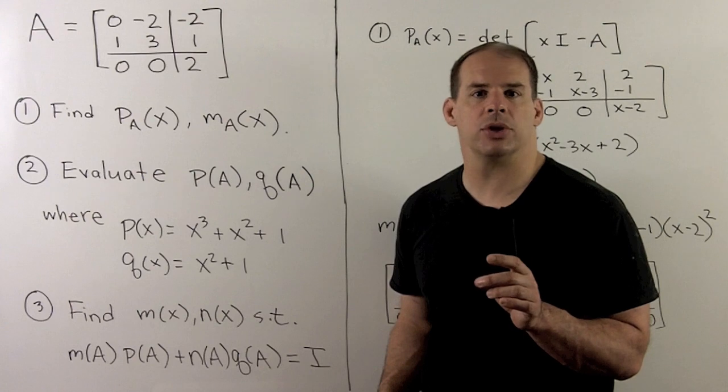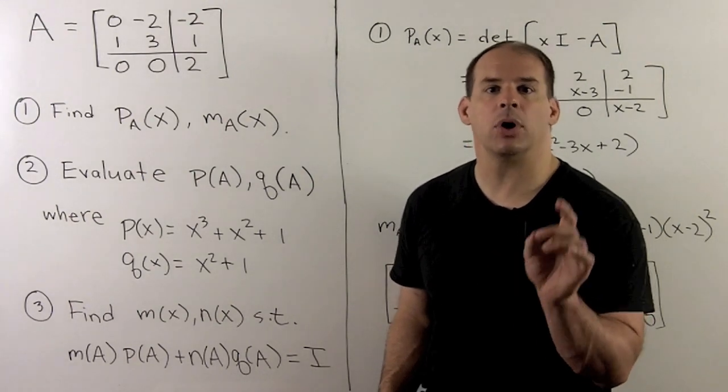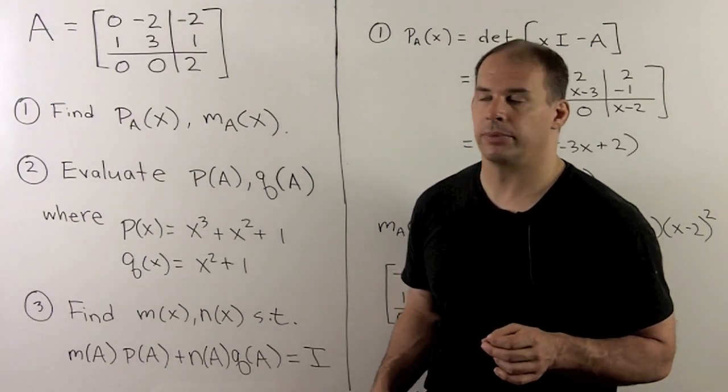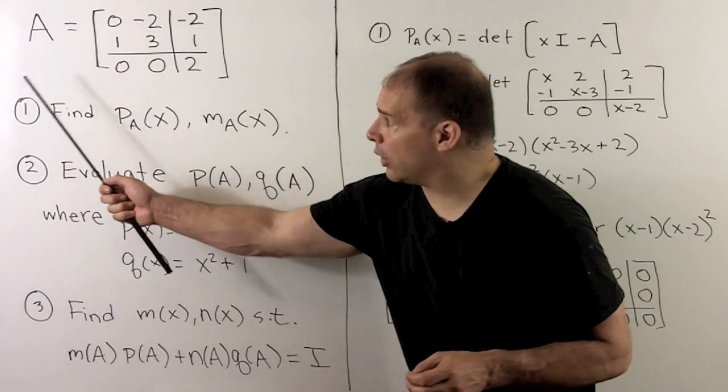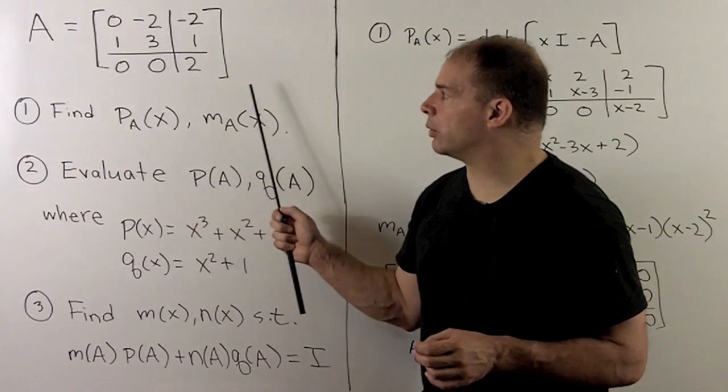Here's an application of minimal polynomials with a look at Bezout's identity on matrices. We start with the following matrix A, a three by three with real entries.